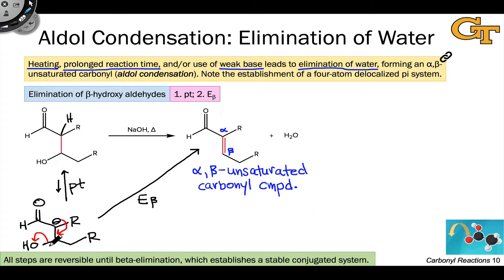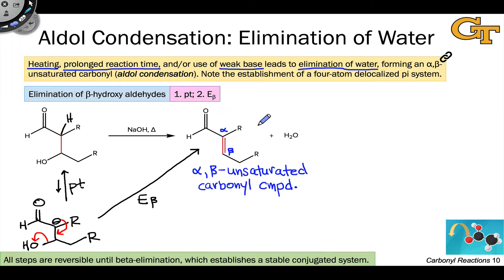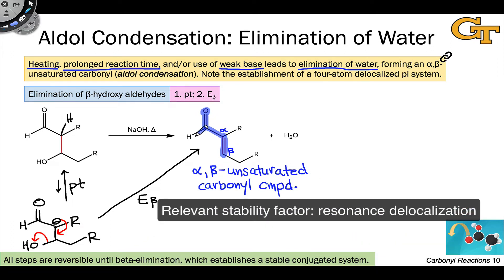This is actually the first step that is not reversible in this process. The reason this step is irreversible is that it establishes a conjugated system in the product — a four-atom pi system consisting of the beta-carbon, the alpha-carbon, the carbonyl carbon, and the carbonyl oxygen. That delocalized pi system is quite stable, and so this beta elimination tends to be irreversible.